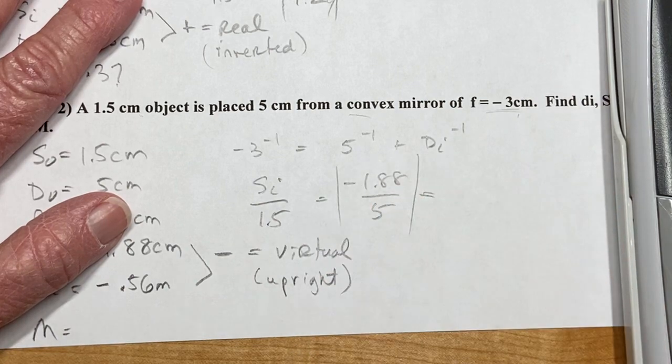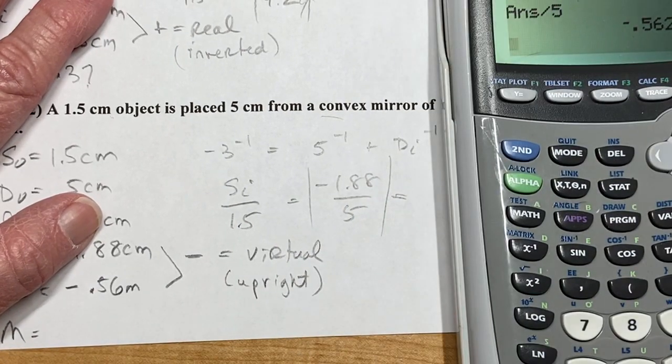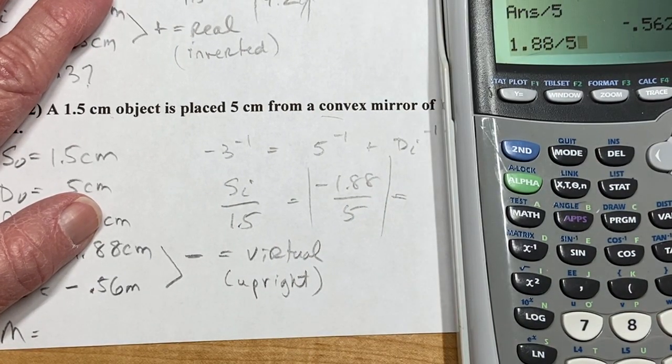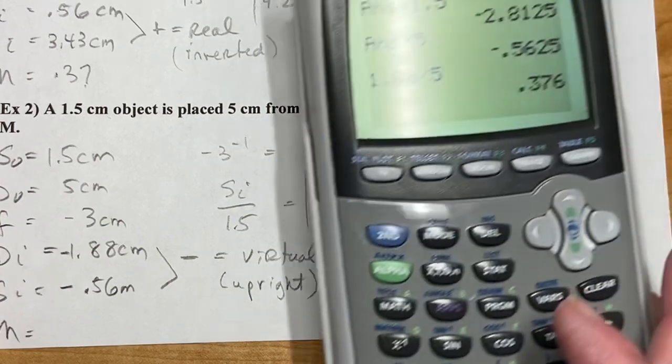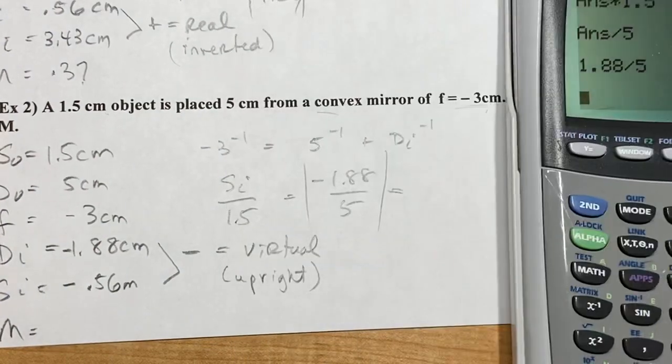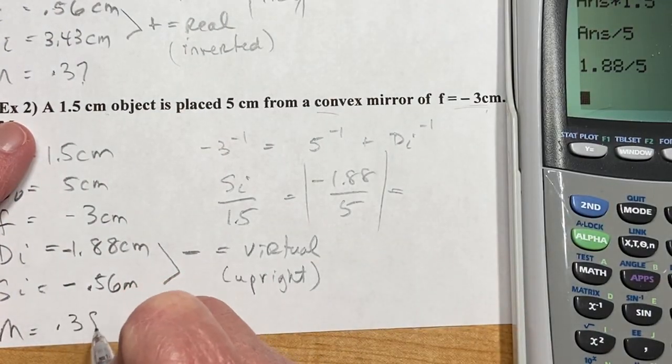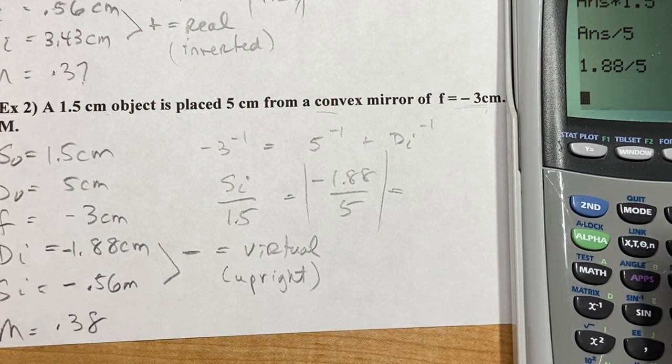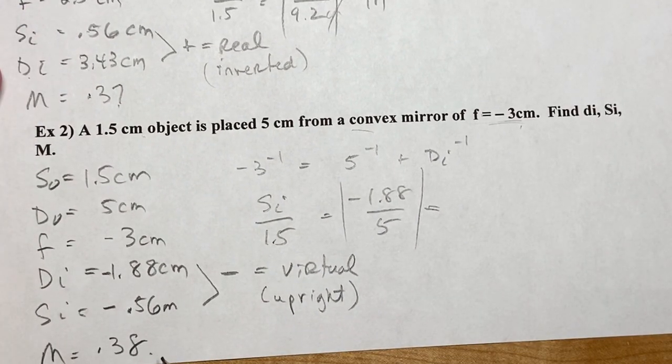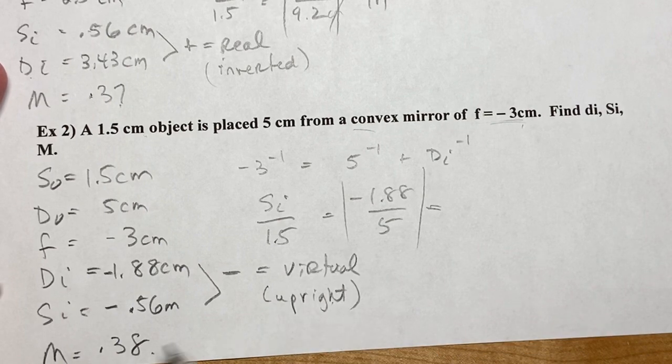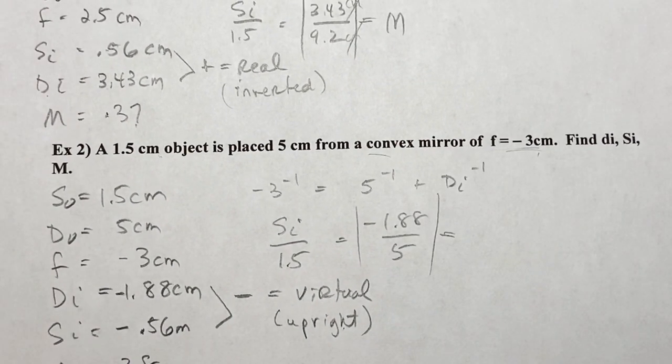So to get the magnification, I'm just going to take the absolute value here. So I'll just type in 1.88 divided by 5, and it doesn't matter which one you do, si over so, or di over do. All right, and I'm getting, let's see, what are we getting, 0.38, and it is an absolute value, which means it's going to be positive. We're not going to worry about negatives here. So we know it's virtual, we know it's upright, and we know it's smaller, just from the math. No drawings needed.